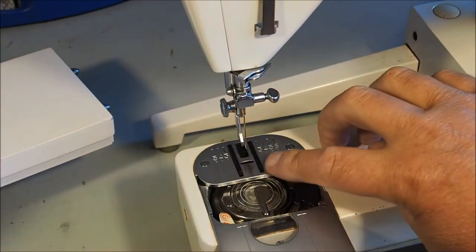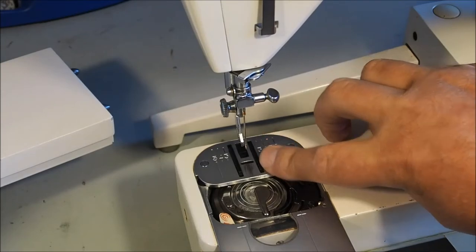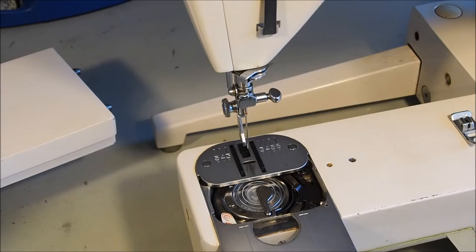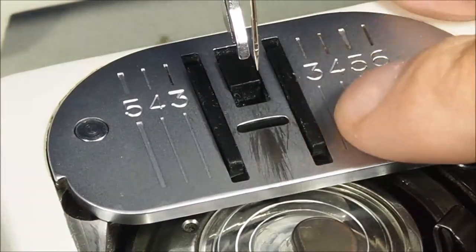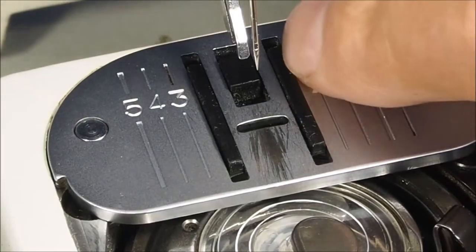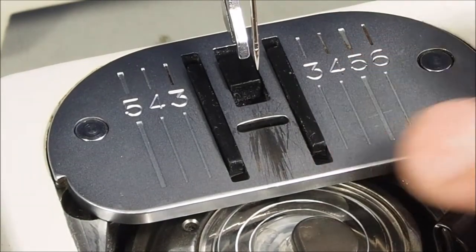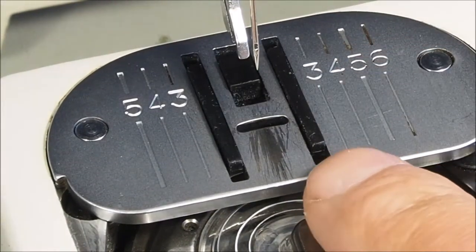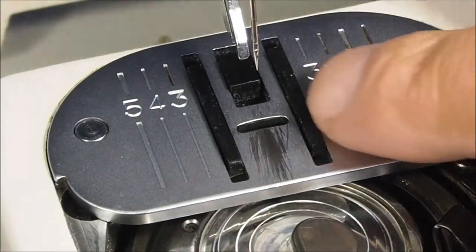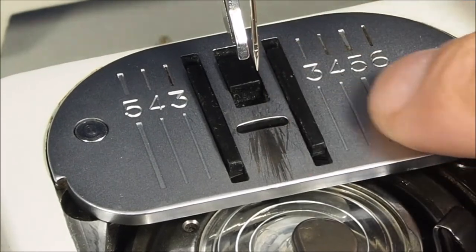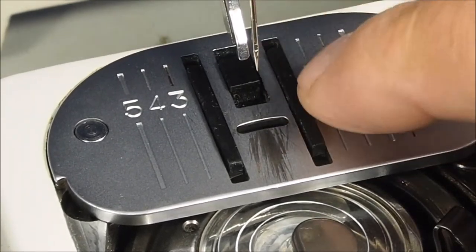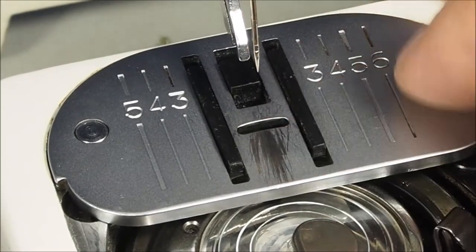This is what they call the soft touch fabric feed. If we take a close look, there are no actual feed dog teeth - that's a rubber coating with grip. That's to protect finer weight fabrics and sheer fabrics, so it wouldn't damage them with teeth.